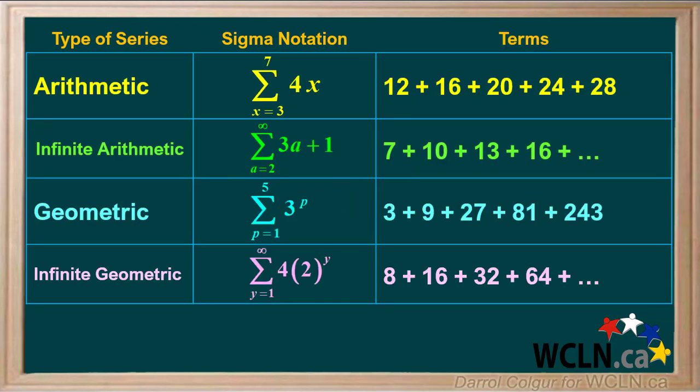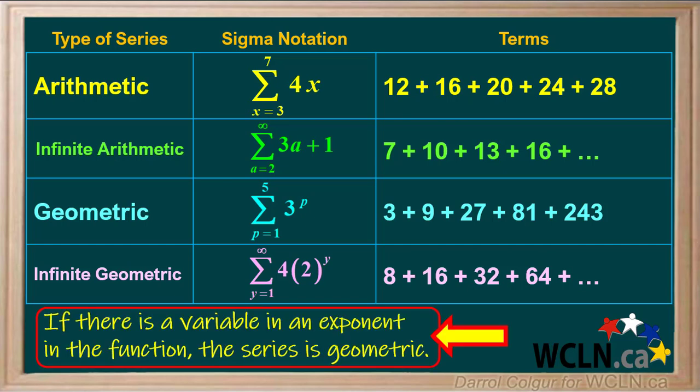Here is a summary of examples of the four different types of series we discussed, with their sigma notations and their terms. Remember, if there is a variable in an exponent in the function, the series is geometric.